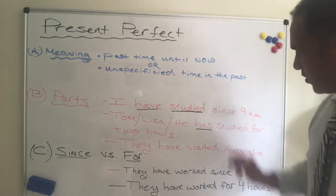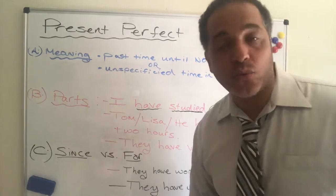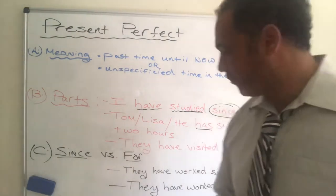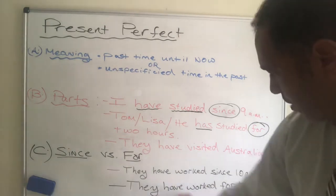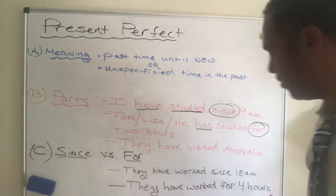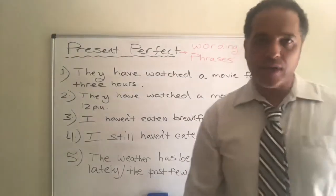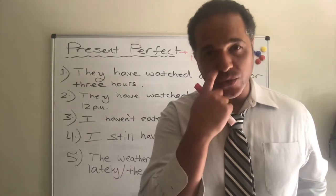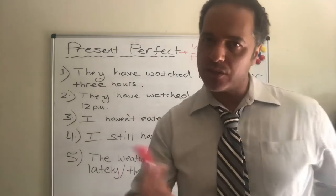In one example I use the word since, and in a second example I use the word for. When we use since, we are talking about a beginning time. For example, they have worked since 10 a.m. When we use for, we are talking about an amount of time — they have worked for four hours. These are some of the words we normally use with present perfect, but there are other ones as well.